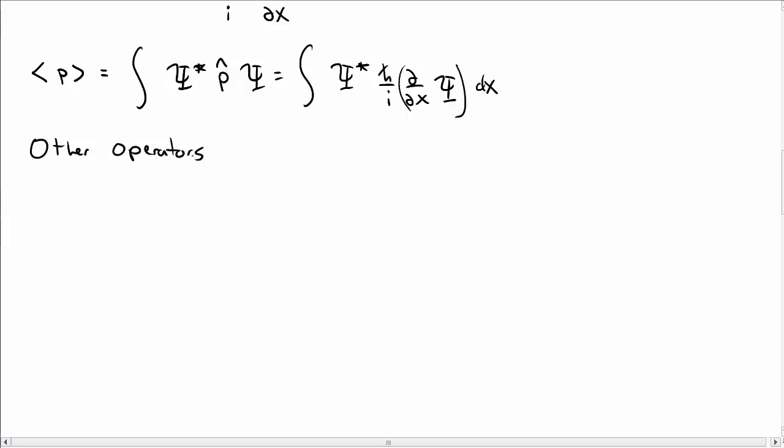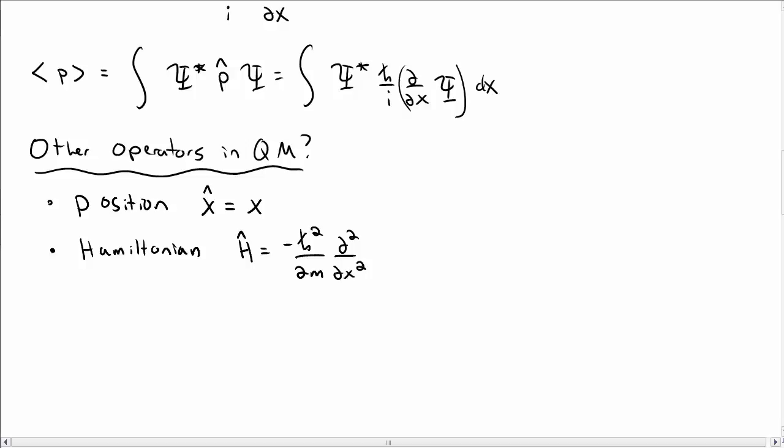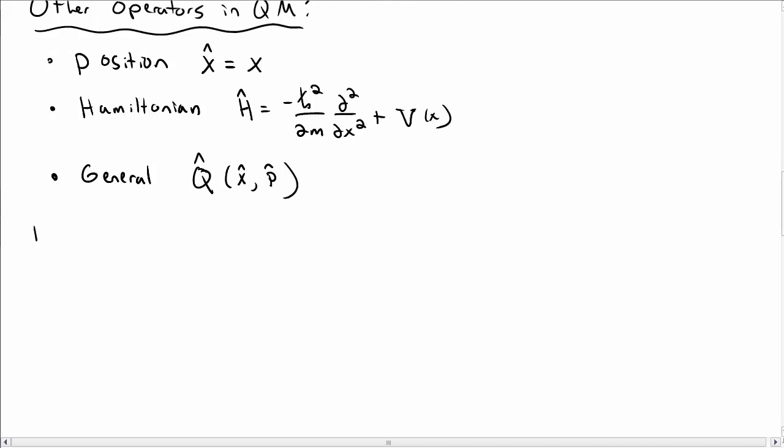Okay, so let's talk about some other operators that you might encounter in quantum mechanics. One we've already seen, you would call it position operator x hat. We put a little hat on things for quantum operators, and that's just x. Another operator you could use is the Hamiltonian operator h hat, which is minus h bar squared over 2m, partial partial x squared plus v of x. More generally, you could have an operator q hat of x hat and p hat, some combination of position and momentum.